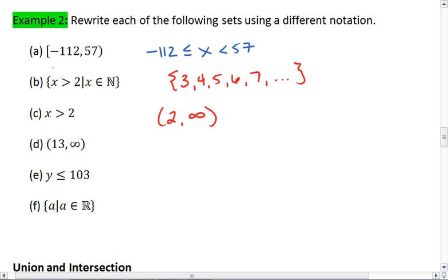D, we're going from 13 to infinity. So we know that X is going to be greater than 13 and less than infinity. We have two rounded parentheses, so we do not put any equal signs underneath.